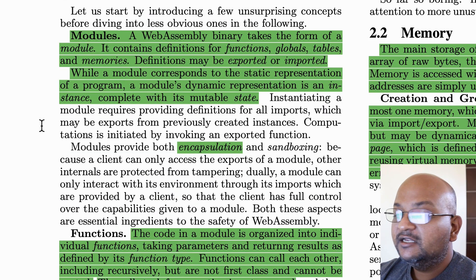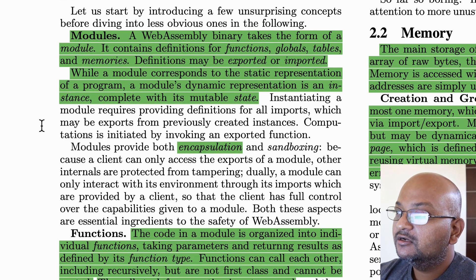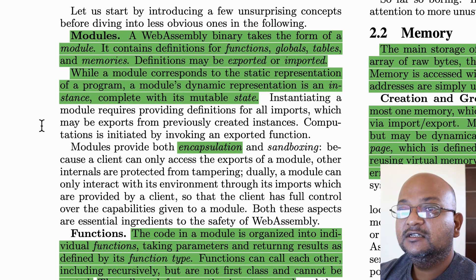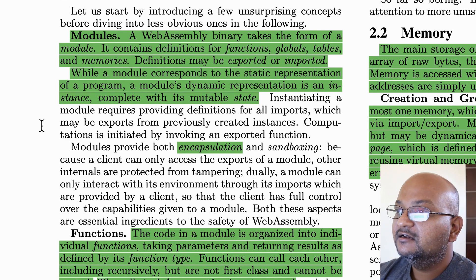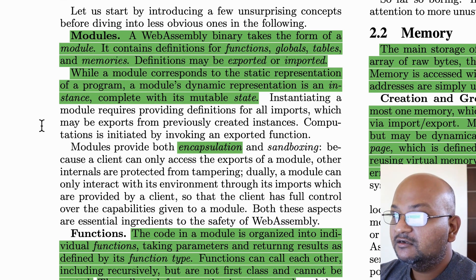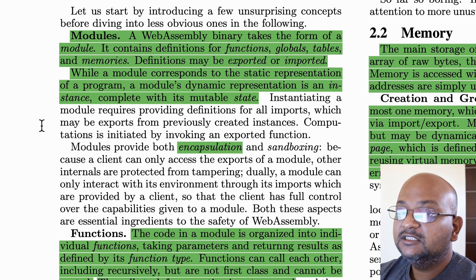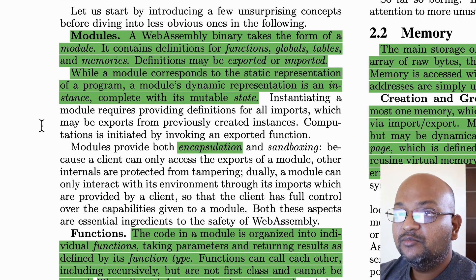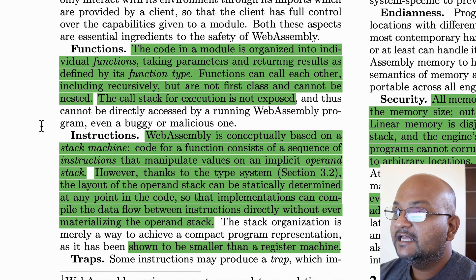The basic unit of shipping and encapsulating code in WebAssembly is called a module. A module contains functions, global variables, local variables, tables, and a memory specific to that module. All the definitions inside a module are not visible externally, but only the ones that are explicitly exported. Modules in turn can import definitions that have been exported by other modules.